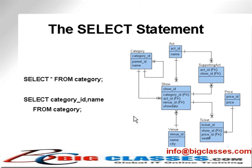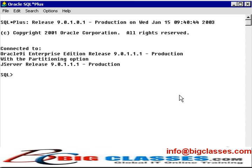Here are two very simple example select statements. 'Select star from category' goes to the category table and selects all the data — all the columns and all the rows — and displays it. The second one simply retrieves two of the columns: the category ID and the name column, leaving out the parent column. We have already used the select statement quite extensively in these courses so far. What we're really going to do is discuss the various pieces of it and understand exactly how it all works.